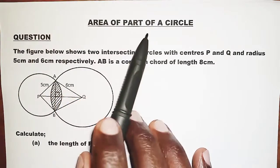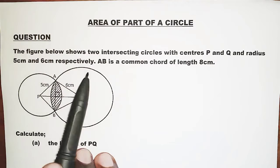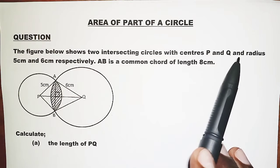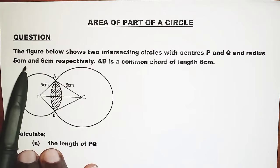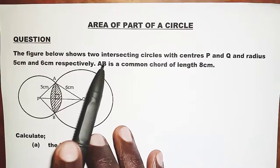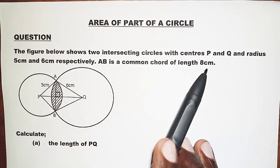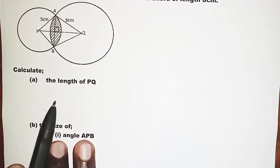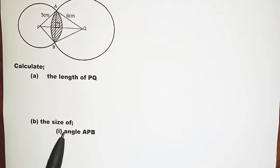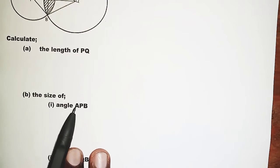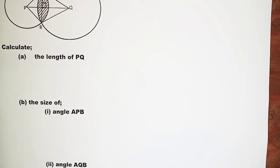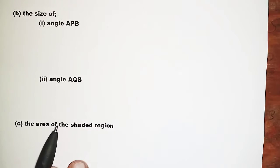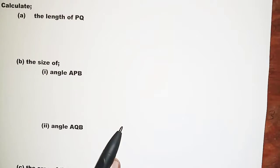The topic today is area of part of a circle. The figure below shows two intersecting circles with centers P and Q and radii 5 centimeters and 6 centimeters respectively. AB is a common chord of length 8 centimeters. We need to calculate: (a) the length of PQ, (b) the size of angle APB, (c) the size of angle AQB, and finally the area of the shaded region.